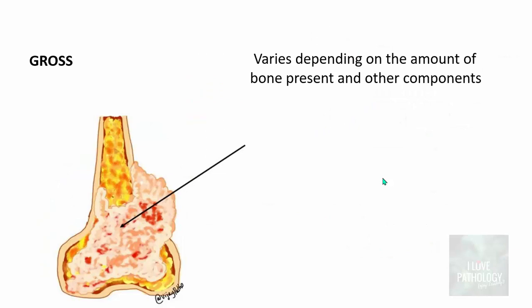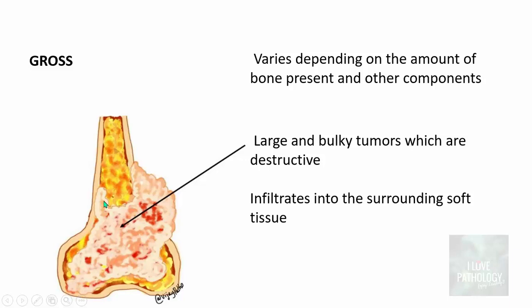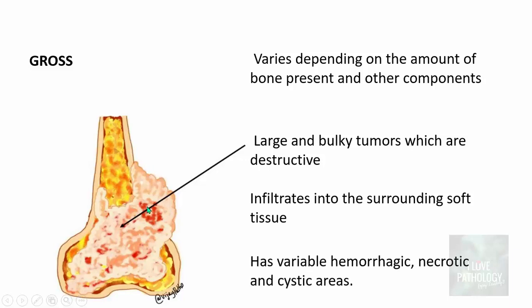The gross features vary depending upon the amount of bone present and other components. These are very large and bulky tumors and highly destructive lesions. They infiltrate into the surrounding soft tissue and have variable hemorrhagic, necrotic, and cystic areas.